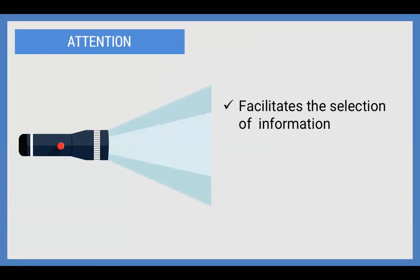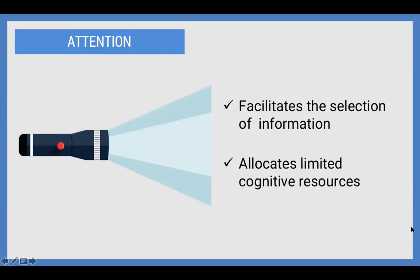Attention is a very important aspect of information processing theory because it facilitates the selection of information that we pay attention to, and it helps us allocate our limited cognitive resources. If you think of our attention as something limited, we can't pay attention to everything at the same time. If you've ever been around three little children all asking for your attention, you know you can't pay attention to each individual request simultaneously — and it's the same thing when people are learning.